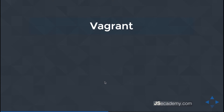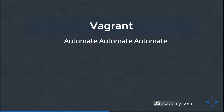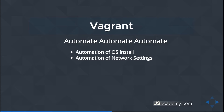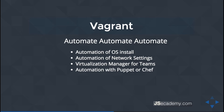Vagrant is a piece of software that helps you configure a virtual machine. Vagrant is used with a virtualization piece of software — this example will be using VirtualBox. If you have not installed VirtualBox, go back a couple videos and install it on your operating system. The main takeaway with Vagrant is to help you automate: it helps with the automation of an OS install, network settings, and managing virtualizations across teams.